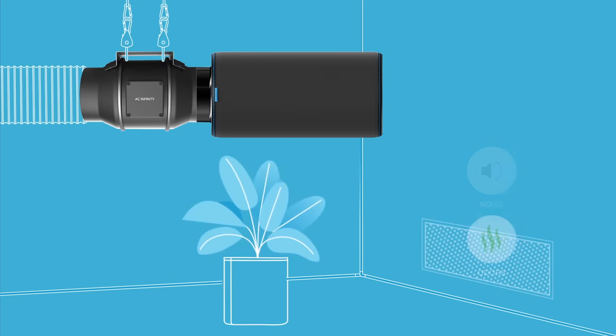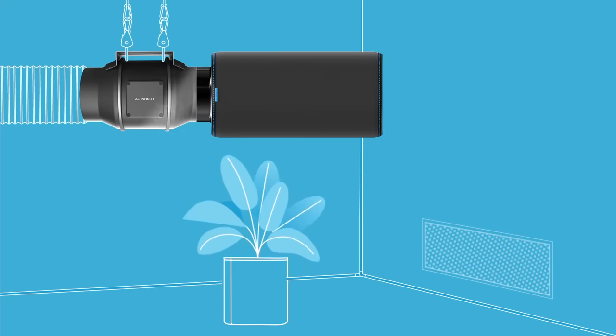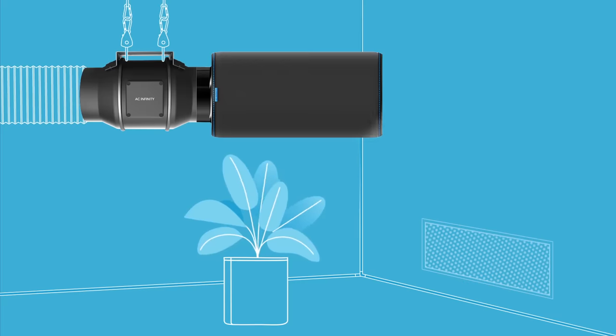Standard ventilation systems consist of an inline fan, ducting, and a carbon filter.